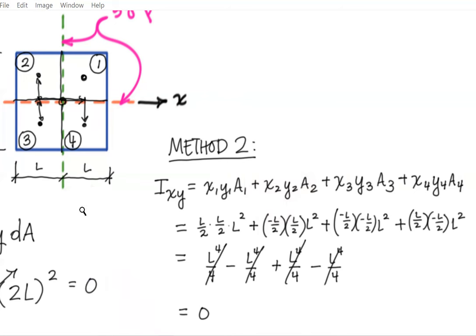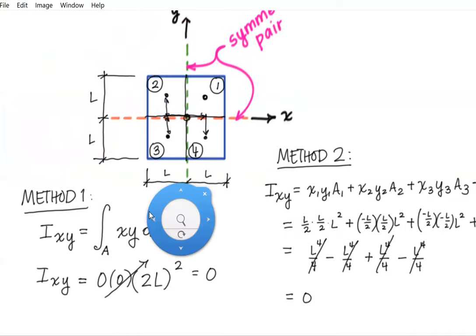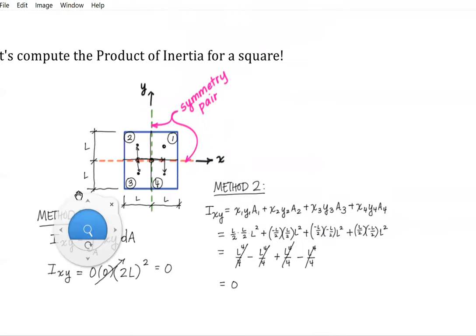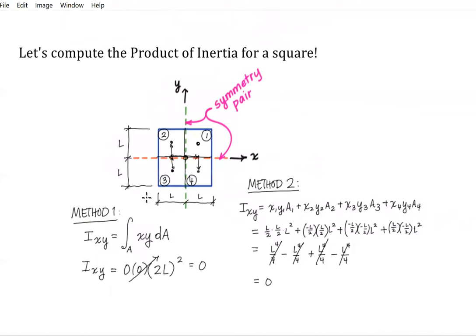So the rule of thumb, if you can find a line of symmetry, you kind of know that your product of inertia is going to be 0, and you can skip some of the trouble of working this out. But I just kind of proved it to you using two different ways to compute the product of inertia for a square. Thanks for watching. I hope this was helpful.